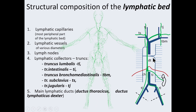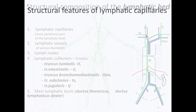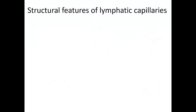The ductus thoracicus is the largest lymphatic vessel in the body. The ductus lymphaticus dexter is quite small, with only two to three centimeters in length.